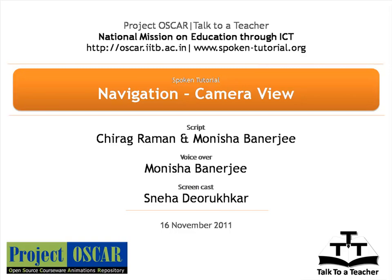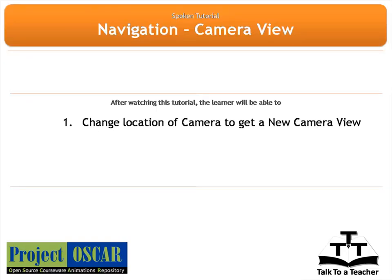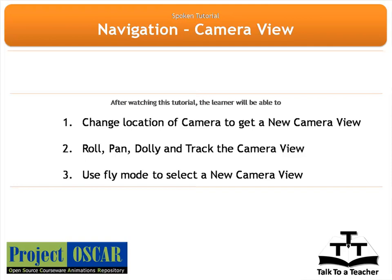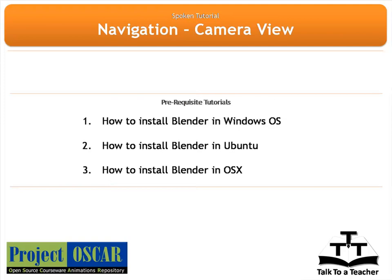Welcome to the series of Blender tutorials. This tutorial is about navigation camera view. We shall learn how to navigate the camera in Blender 2.59. This script has been contributed by Chirag Raman and edited by Monisha Banerjee. After watching this tutorial we shall learn how to change the location of the camera to get a new camera view, how to roll, pan, dolly, and track the camera view, and how to select a new camera view using the fly mode. I assume that you already know how to install Blender on your system; if not, please refer to our earlier tutorials on installing Blender.